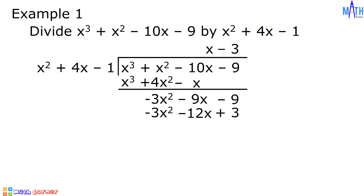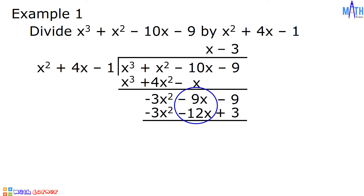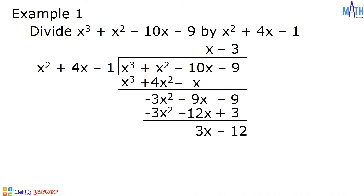Let us subtract. Negative 3x squared minus negative 3x squared is equal to 0. Negative 9x minus negative 12x equals positive 3x. Negative 9 minus 3 equals negative 12. And 3x minus 12 is the remainder.